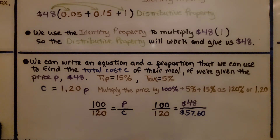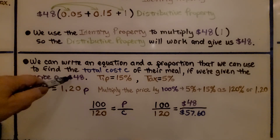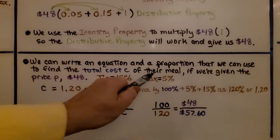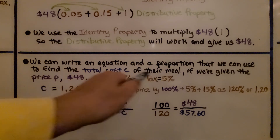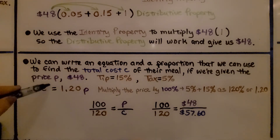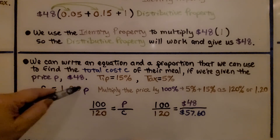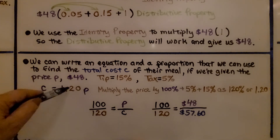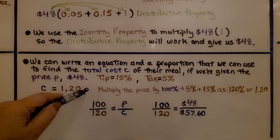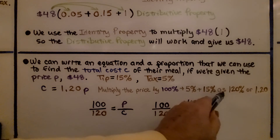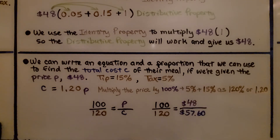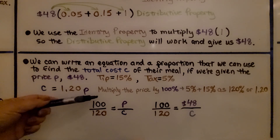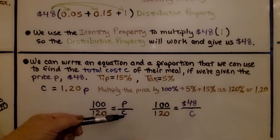We can write an equation and a proportion to find the total cost C of their meal, given the price P, which is $48. The tip is 15% and the tax is 5%, written as decimals. So we have C equals 1.20 times P — multiplying the price by 100% plus 5% plus 15%, which is 120% or 1.20. We also have the proportion 100 divided by 120 equals P divided by C.